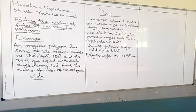In that particular question the objective is finding the number of sides of an irregular polygon. Angles of an irregular polygon are not all equal. In this particular example, an irregular polygon has some of its interior angles as 130 degrees, 140 degrees, 150 degrees and the rest are equal with each having 120 degrees. Find the number of sides of the polygon.